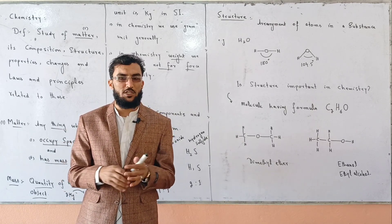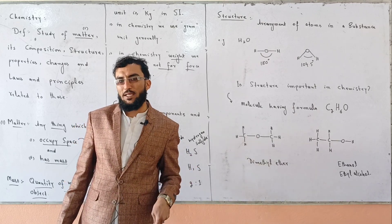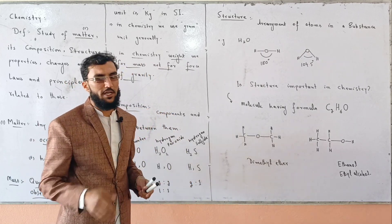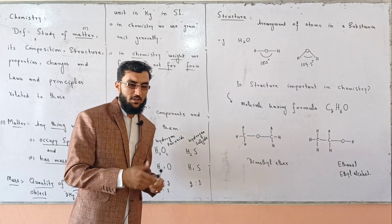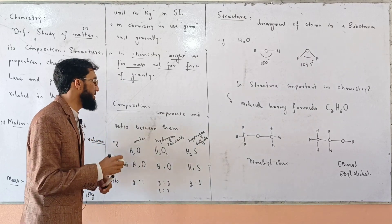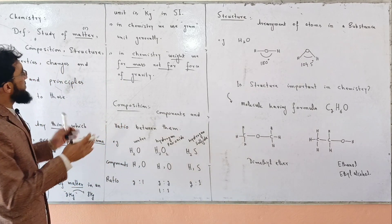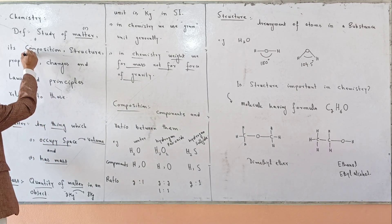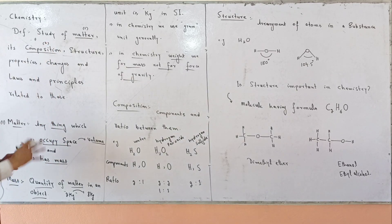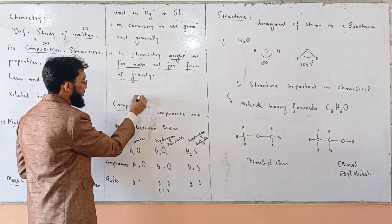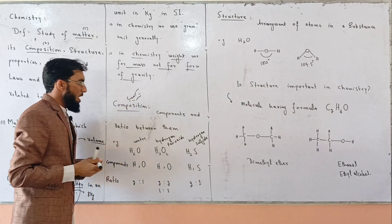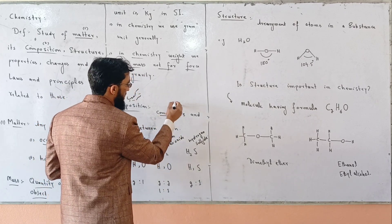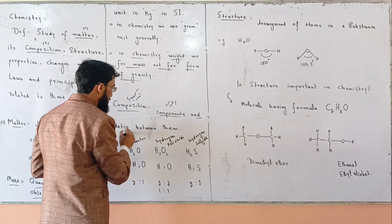If we use the model of matter, we can define matter more precisely. The definition of matter relates to its model. That model involves composition — composition is made up of components and their ratios, typically described in terms of two or three components.